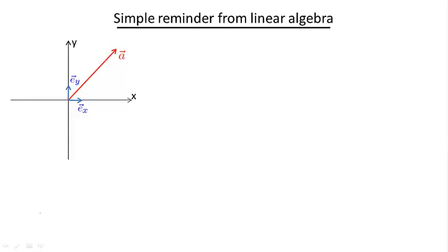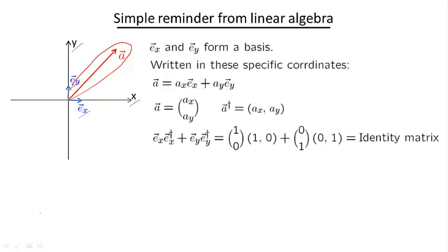What I have here is simply a planar vector in two dimensions, some vector A. If I have a coordinate system X and Y with some unit vectors Eₓ and Eᵧ, I can write my vector as a linear combination of this unit vector. Eₓ here is (1,0) and Eᵧ is (0,1).